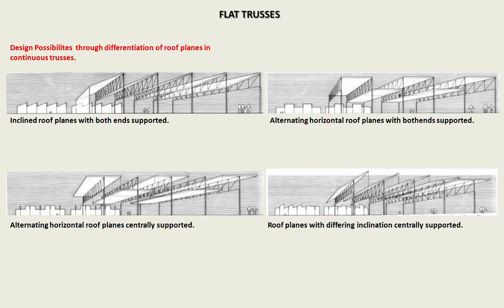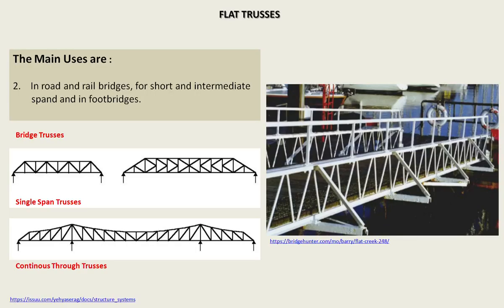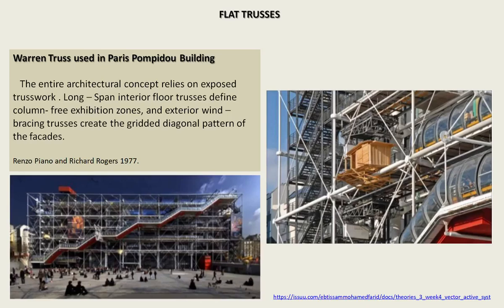The design possibilities through differentiation of roof plans in continuous trusses include: inclined roof plans with both ends supported; horizontal roof plans with both ends supported; alternative horizontal roof plans centrally supported; and roof plans with differing inclination centrally supported. The Vierendeel truss is used in the Paris Pompidou building. The interior architectural concept relies on exposed truss work. Long-span entire-floor trusses define column-free exhibition zones, and exterior wind-bracing trusses create a diagonal pattern on the façade.